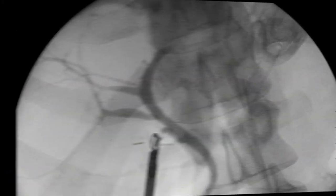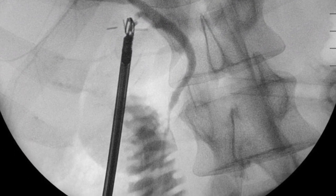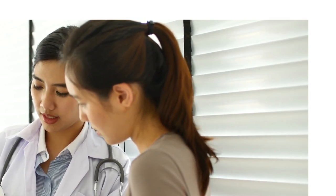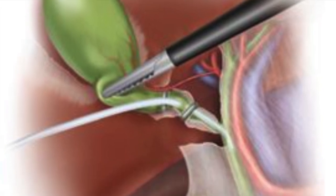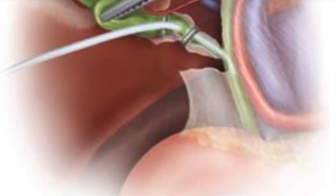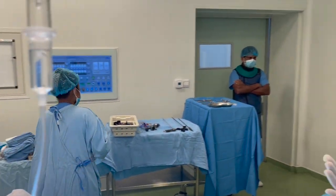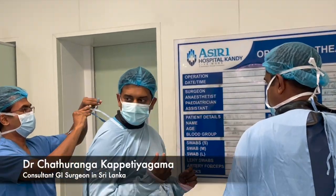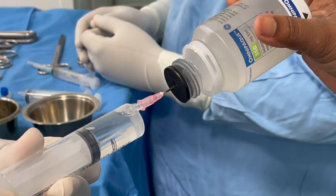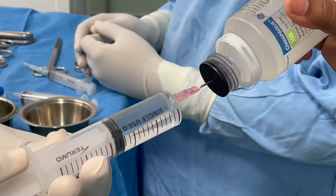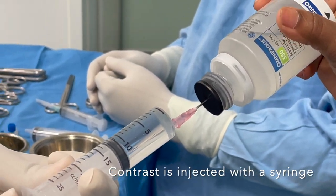Understanding intraoperative calling diagram: a closer look at your gallbladder health. Have you ever wondered what happens during surgery to ensure the health of your gallbladder and bile ducts? One important tool that surgeons use is called an intraoperative calling diagram, or IOC. During certain surgeries, particularly those involving the gallbladder or bile ducts, it is performed to obtain detailed images of these vital structures.